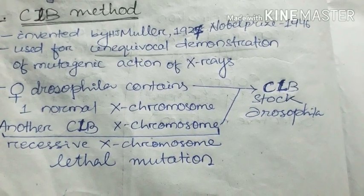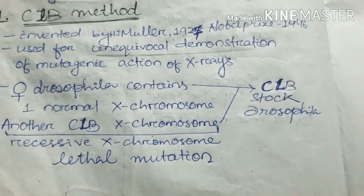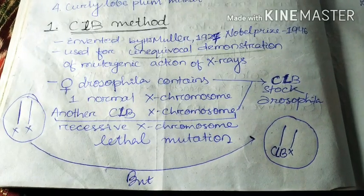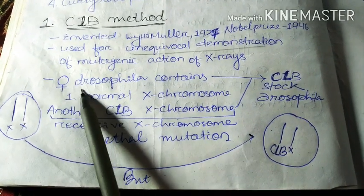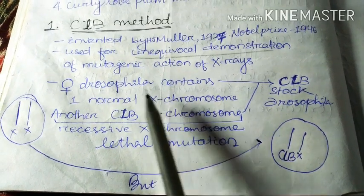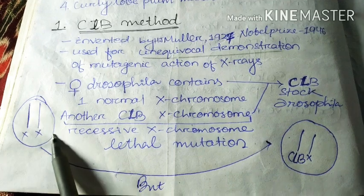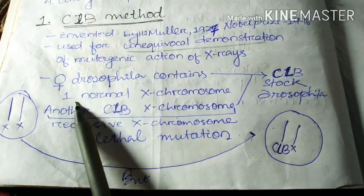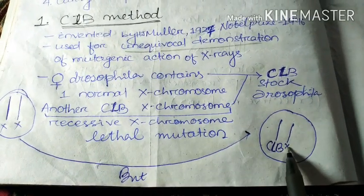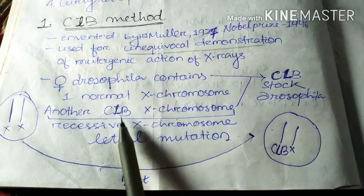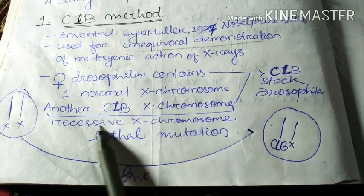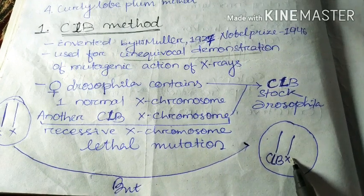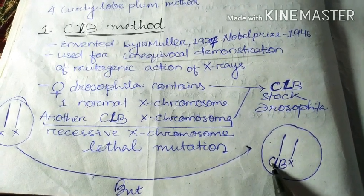He took all the clear evidence to prove his theory and experiment. He took the mutagenic action of X-rays. Now, what is the CLB chromosome? He took the female Drosophila — as I said before, normally the female contains two X chromosomes. But here, in female Drosophila, one normal X chromosome is there, and another is treated with CLB, so it is called the CLB chromosome. This is the recessive X chromosome.